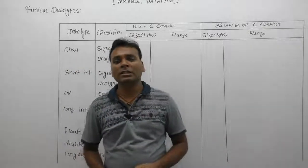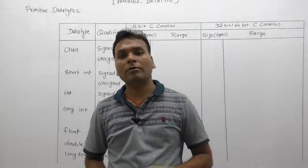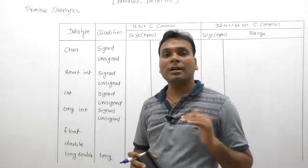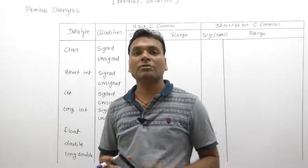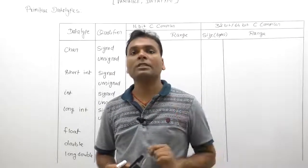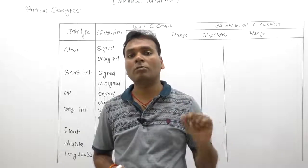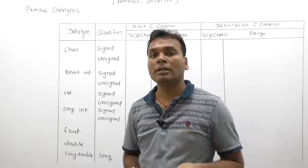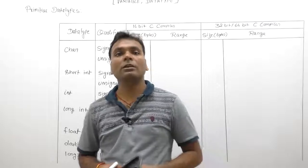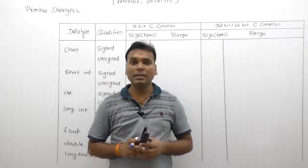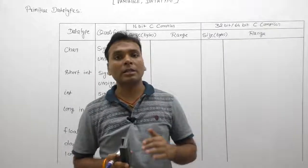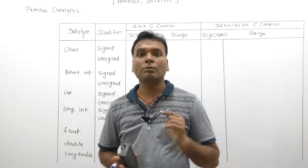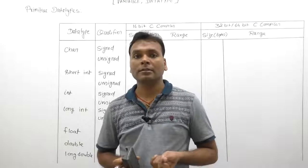In this table we want to discuss the size and range properties of different data types with their available qualifiers. There are two types of qualifiers: signed qualifier and size qualifier. Size qualifier includes short and long. Long can be applied to integer or double — in the case of double, only long applies. Similarly, the signed qualifier has two types: signed and unsigned, and is applicable only for characters or integers.